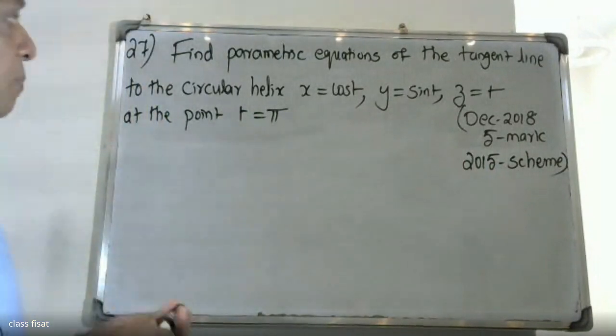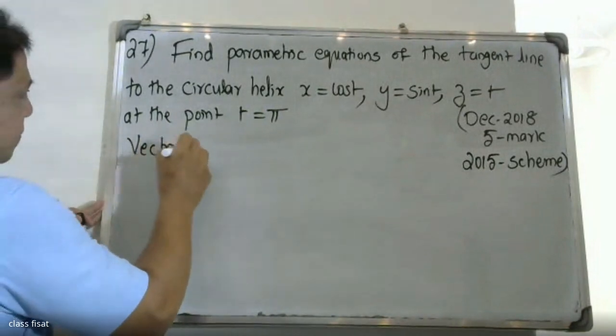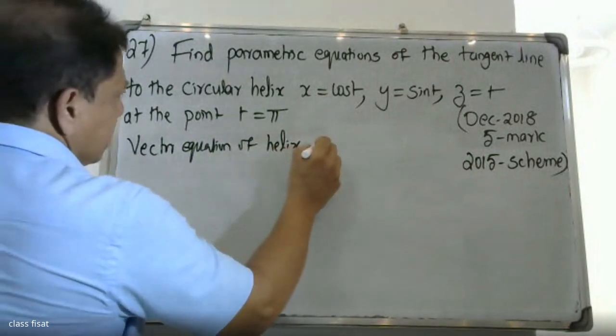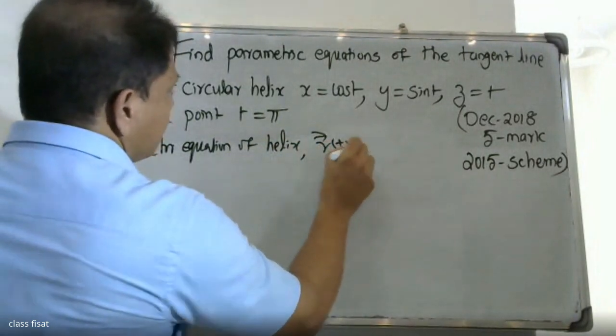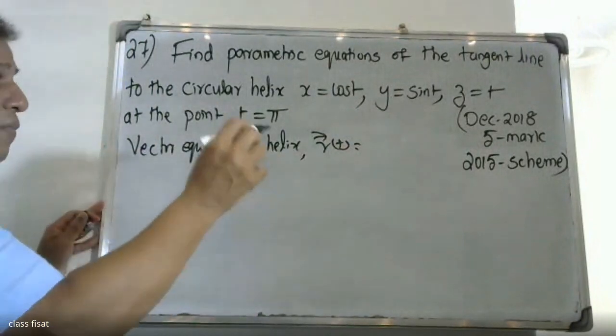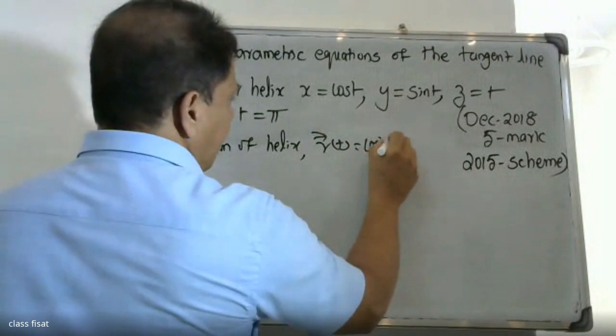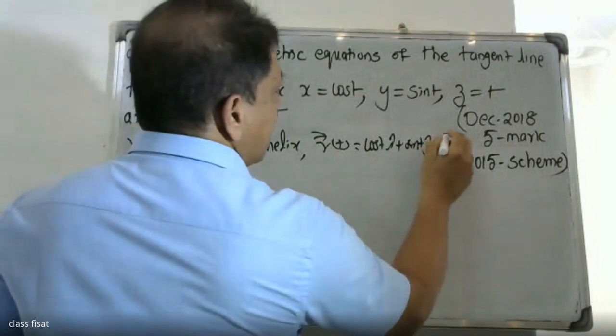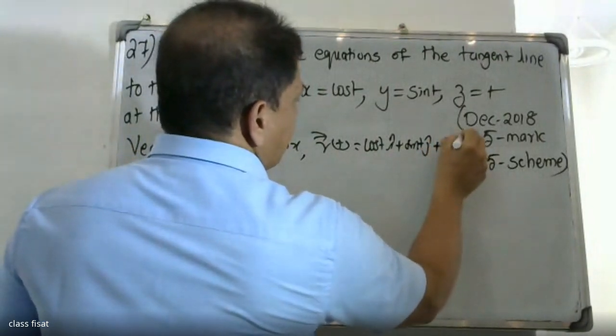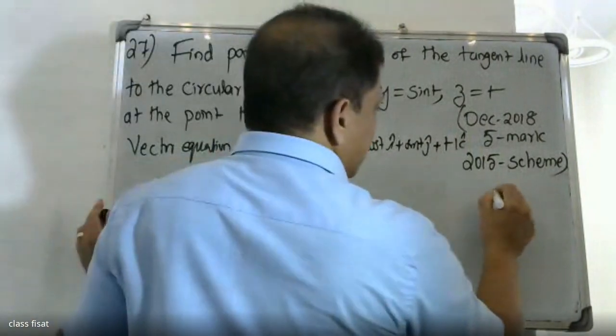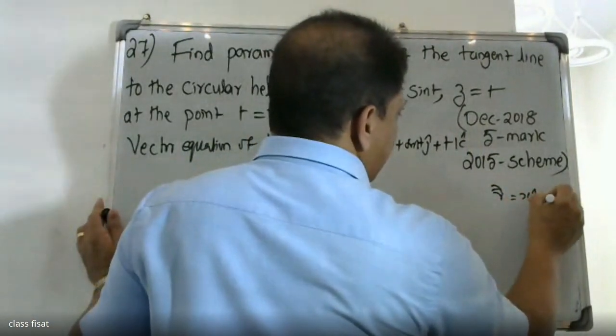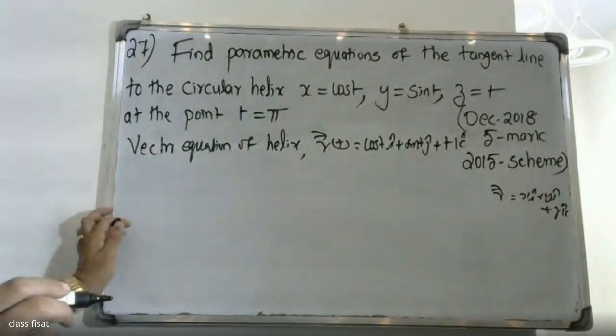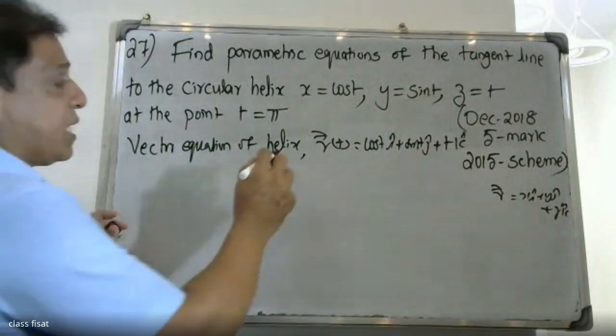First, the vector equation of helix. R of t is equal to x i plus y j plus z k, or cos t i plus sin t j plus t k. This is the vector equation of helix.